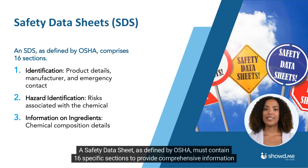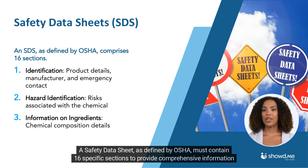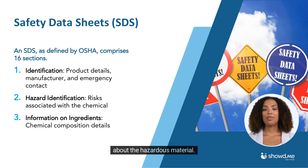A safety data sheet, as defined by OSHA, must contain 16 specific sections to provide comprehensive information about the hazardous material. Let's explore the sections.